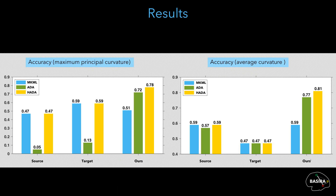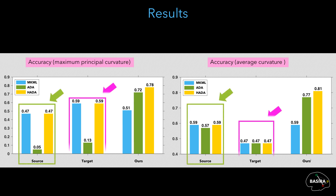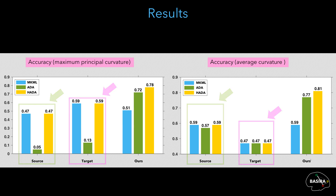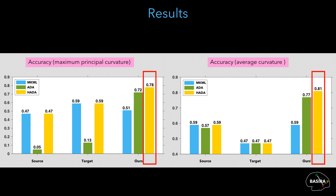For the second evaluation, we report the classification accuracy of each method using the source and target graphs independently and the concatenated source and predicted target graphs. Both figures illustrate that our HEDA achieved the highest classification accuracy when including the predicted target graphs with the source graphs.